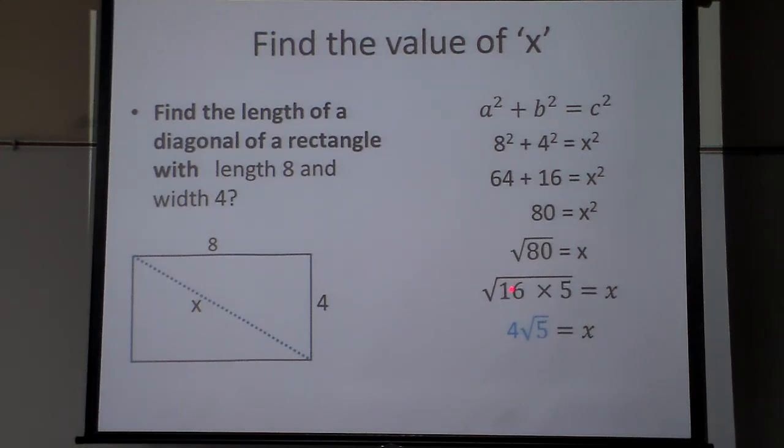So that makes this answer. If I make that a 4, I can pull it out. So the answer is 4 square roots of 5, which is the actual correct answer for this problem. The square root of 80 is right, but it will not be counted right because it will reduce to make this.